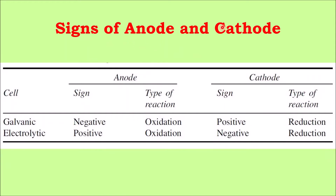The signs of the electrodes — anode and cathode. In an electrolytic cell, the sign of the anode is positive and the sign of the cathode is negative. But if we see for the galvanic cell, it is completely opposite — the sign of the anode is negative and the cathode is positive. Why is this happening? We will learn why anode is positive and cathode is negative in this video, and why anode is negative and cathode is positive in a galvanic cell we will see later.